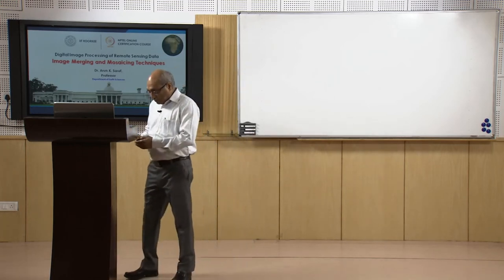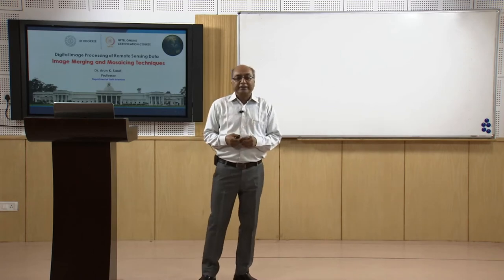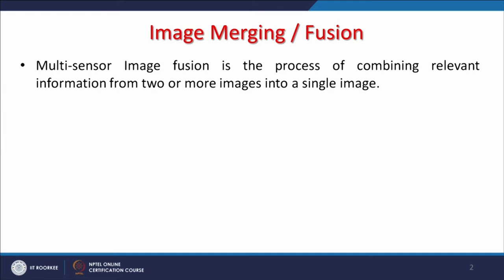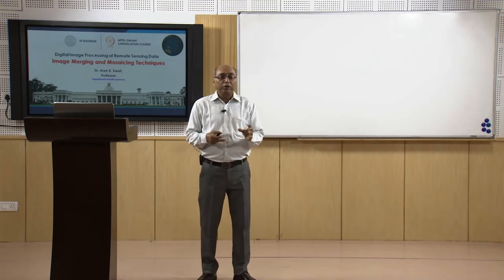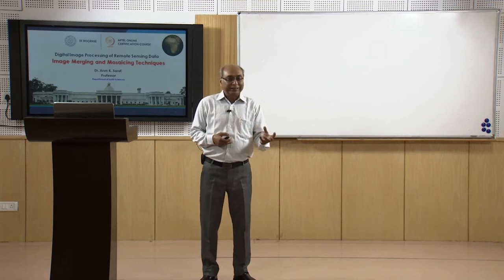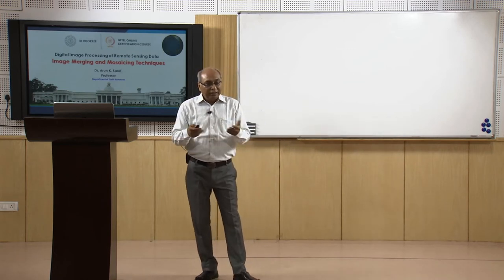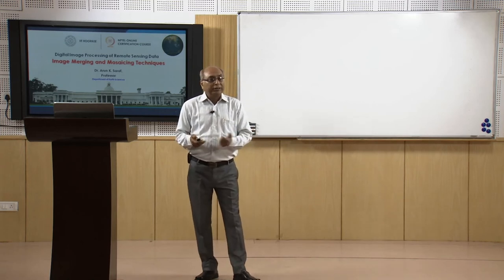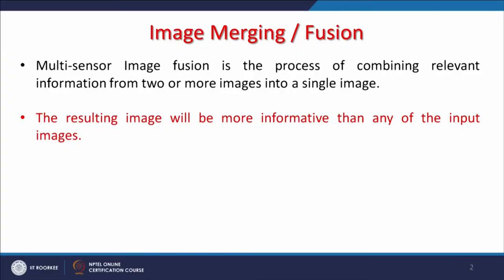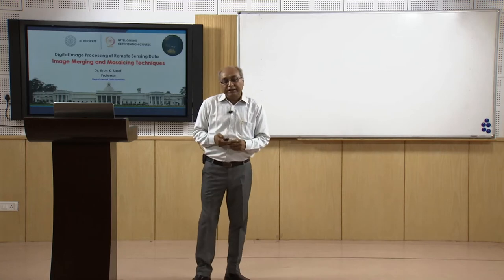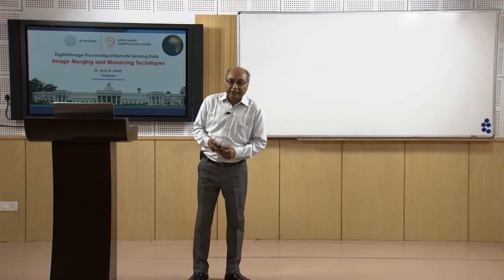Let us start with what is basically image merging or image fusion. Multi-sensor image fusion is the process of combining relevant information from two or more images into a single image. We might be exploiting the spatial resolution of one sensor's image and the spectral resolution of another. Merging might also create a different kind of merged image at the same resolution but from two different dates for change detection studies, and the resulting image will be more informative than any of the individual input images.